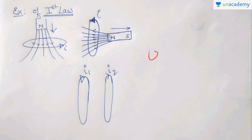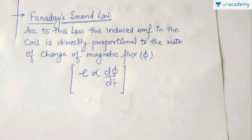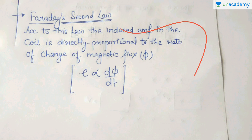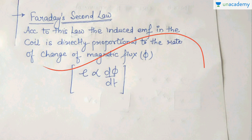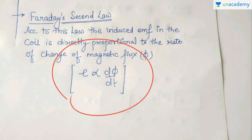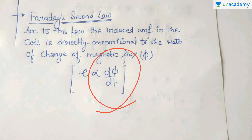So this is the first law. Now, Faraday's second law states that the induced EMF in a coil is directly proportional to the rate of change of magnetic flux. The EMF produced is directly proportional to the negative of the rate of change of magnetic flux. The negative sign basically deals with the direction. The magnitude of the induced EMF is directly proportional to dΦ/dt — the rate of change of magnetic flux linked with the coil — where the number of turns in the loop is 1.